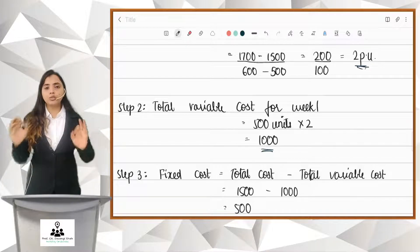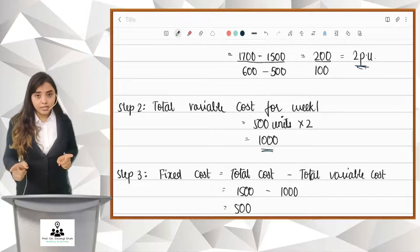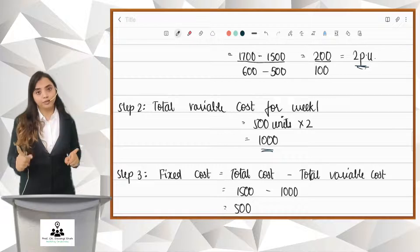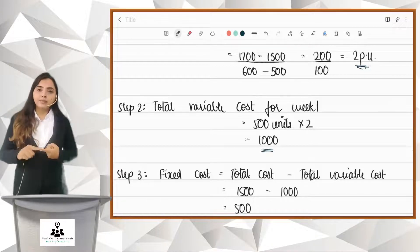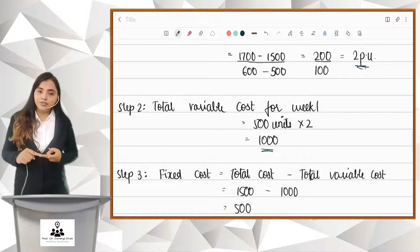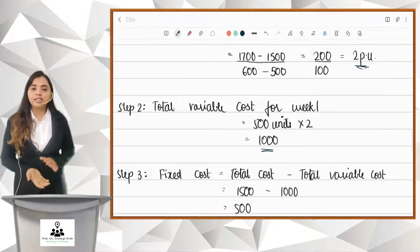This capsule is so very important. It will help you in the chapter cost sheet, in the chapter standard costing, in the chapter budgetary control. This is the most important capsule you need to know. What is semi-variable cost? How to identify the cost and how to do the breakup? This is the most important capsule.